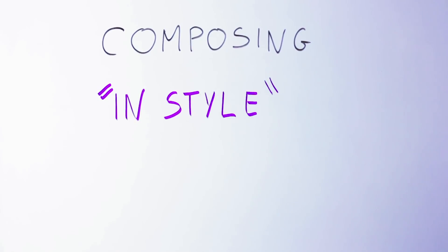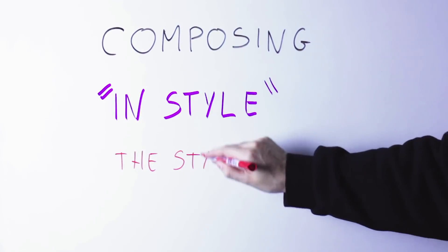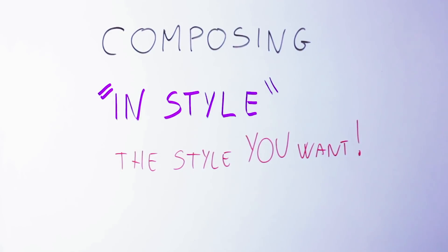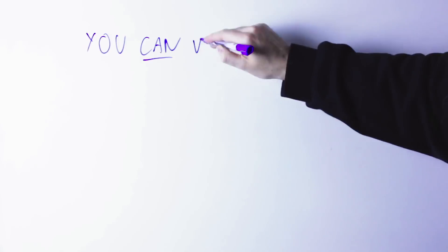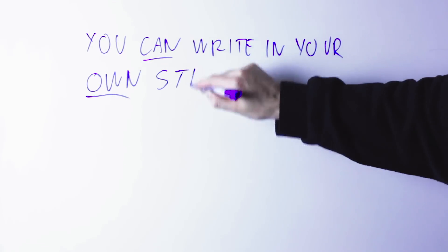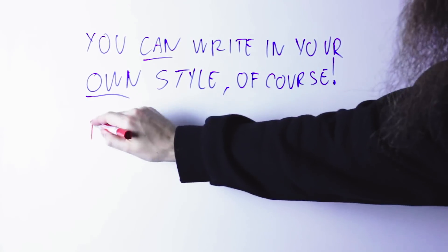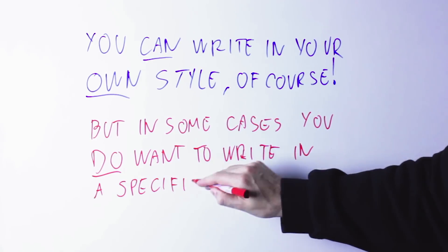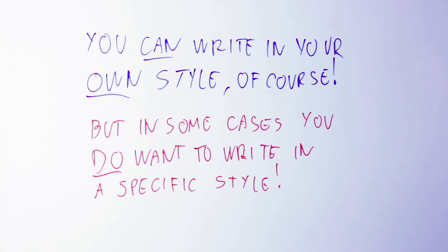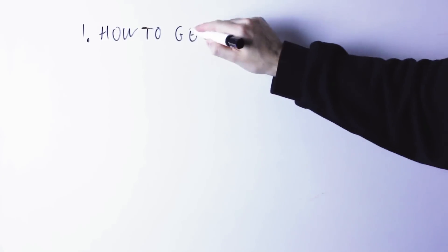A problem that many musicians and songwriters have is how to compose in a specific style. This is a known problem for many songwriters because what they're thinking is simply that they're going to write their own music and it doesn't really matter what kind of style this music is in — it's their music and that's it. But there are some situations where you do want to learn how to write a jazz song, a rock song, a blues, or any other kind of style. So how do we do that? How do we absorb the elements of a style well enough so that we can write in that style?